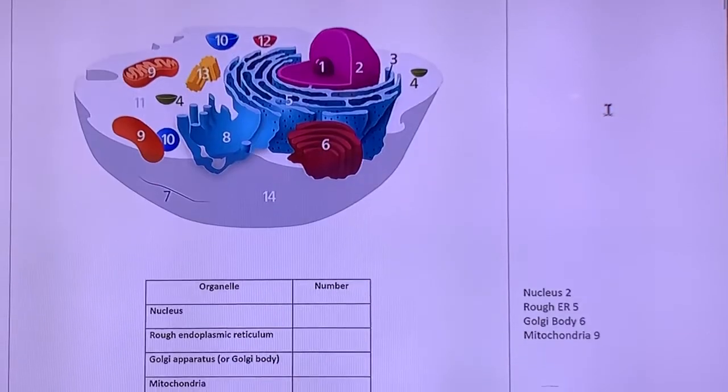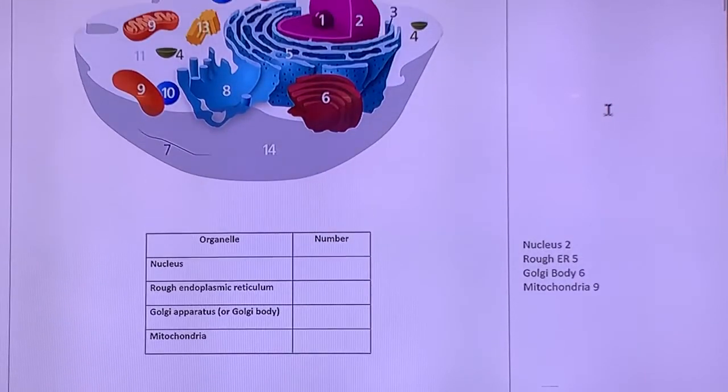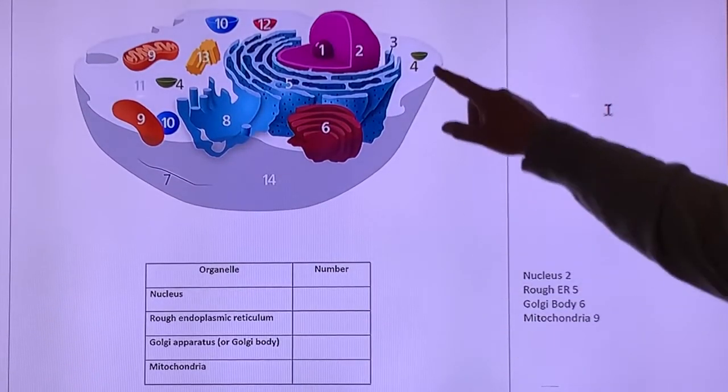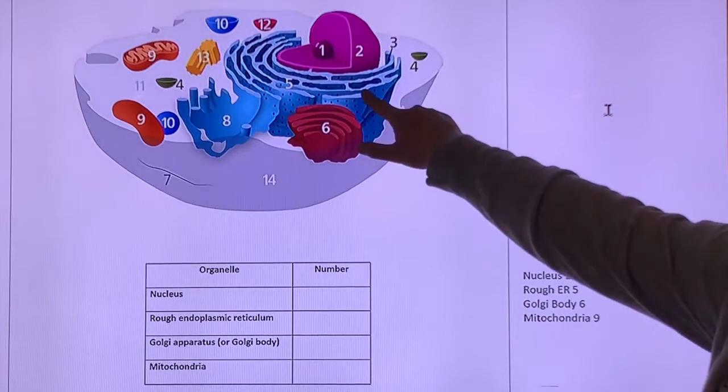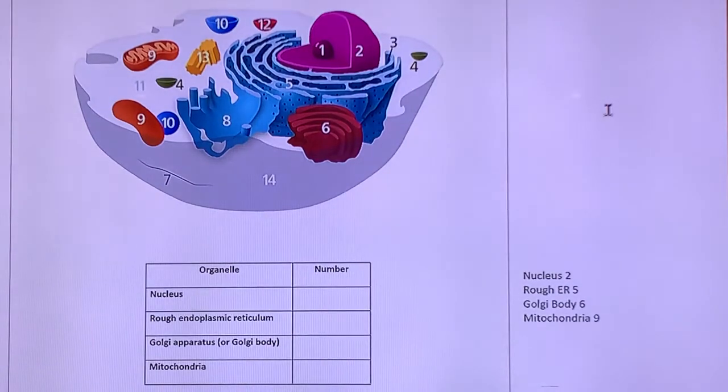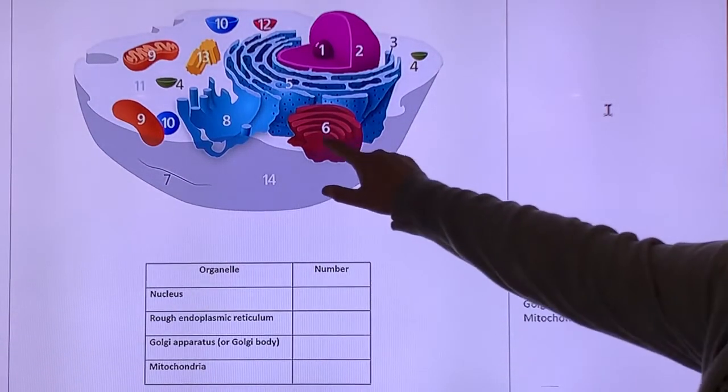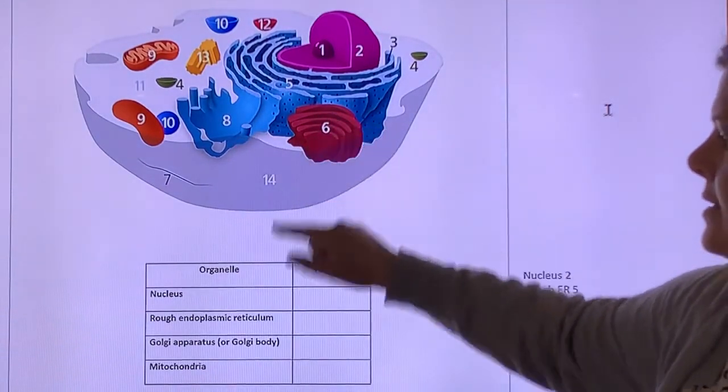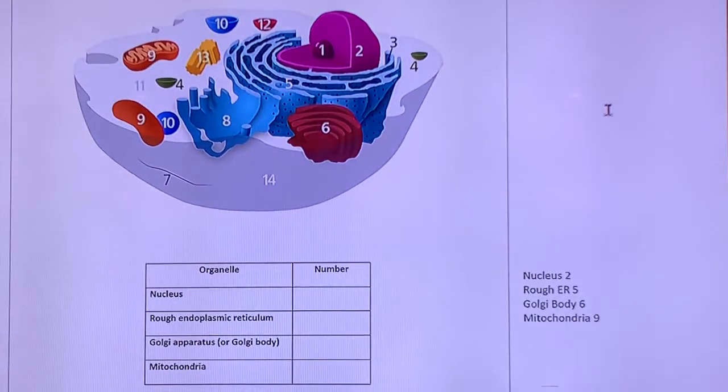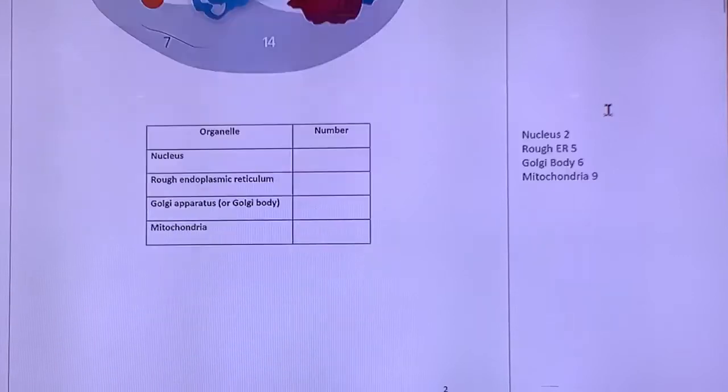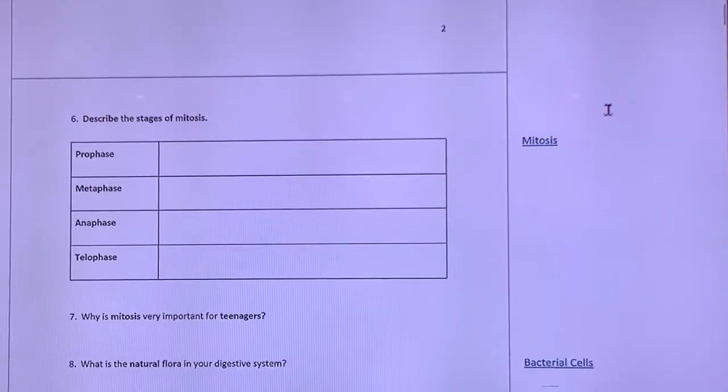This one here, you had to label the organelles with the correct number. So the nucleus is number two. The rough endoplasmic reticulum or rough ER is number five. The Golgi apparatus or Golgi body is number six. Sort of looks like a stack of pancakes. And the mitochondria looks like the jelly bean. It's number nine.